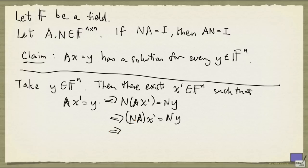And since N times A is the identity matrix, that gives x' equals Ny. So y is Ax' equals A times Ny, because x' is Ny.